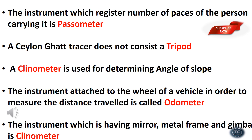A clinometer is used for determining the angle of slope — a vertical angle measurement. The instrument attached to the wheel of a vehicle in order to measure the distance traveled is called the autometer.